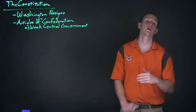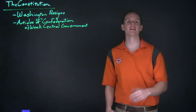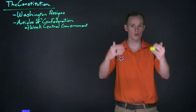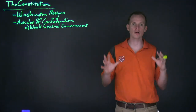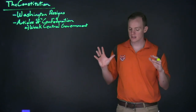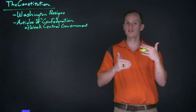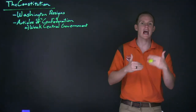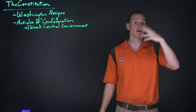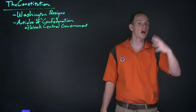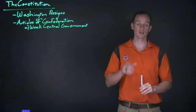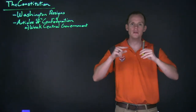On December 23rd, 1783, before the Continental Congress, Washington relinquished his sword and resigned. This was huge because he effectively ensured that this new government — this new nation after their victory in the Revolution — would be a government not of a dictator, not of a king, but rather a government of the people. But the question was, how would the people govern?